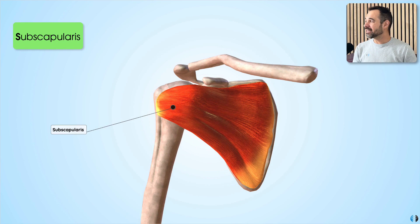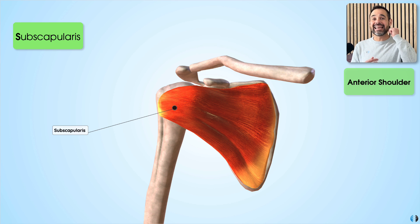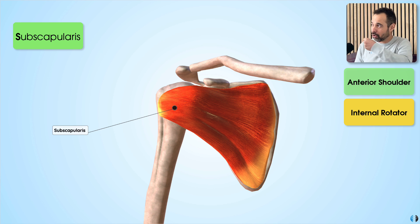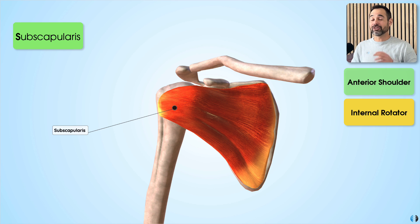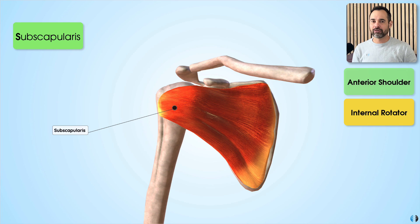Conversely, the subscapularis is the only muscle located on the anterior surface of the shoulder, making it the key internal rotator of the rotator cuff. When it contracts, it pulls the humerus into internal rotation. It's important to remember that the subscapularis is considered the largest muscle of the rotator cuff and is suggested to provide 50% of the power output for the whole rotator cuff.